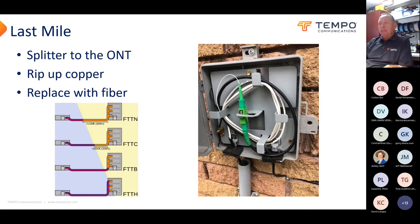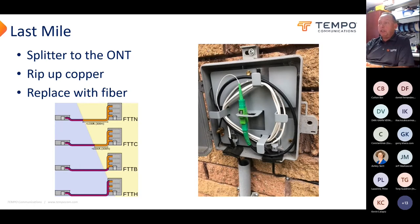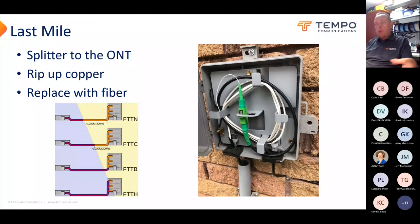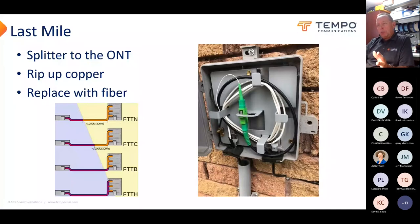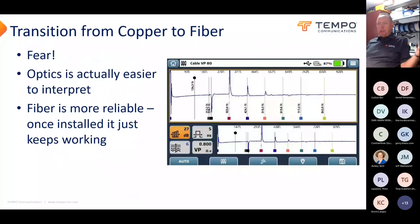The last mile is defined from the splitter to the optical network terminal. You can see in this picture — I hope it's bend-insensitive fiber, because the technician wound it pretty tight, which would cause a lot of loss with standard single-mode fiber. The challenge is they're ripping out the copper and putting in fiber, so there's a bit of a learning curve. In the bottom left-hand picture, you can see the fiber progressively getting closer and closer to the end user. The transition from copper to fiber can be scary for some people — but it doesn't need to be.